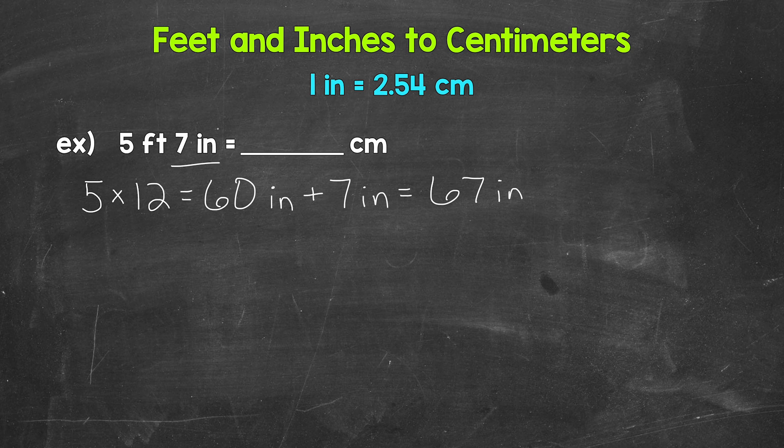1 inch equals 2.54 centimeters. So we have 2.54 centimeters 67 times.